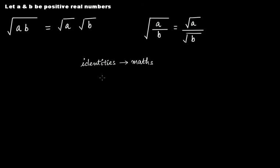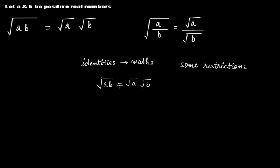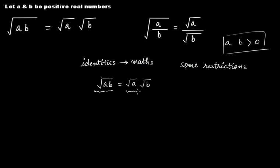Let's take this one. Here we have written that square root of a multiplied by b is equal to square root of a multiplied by square root of b. This holds within some range — there can be some restrictions, some validity. Here, a and b have to be greater than zero, that is, they have to be positive real numbers. If we fulfill this requirement, then whatever value you take for a and b, the left-hand side expression will always be equal to the right-hand side expression.